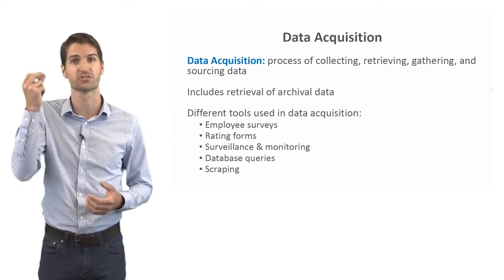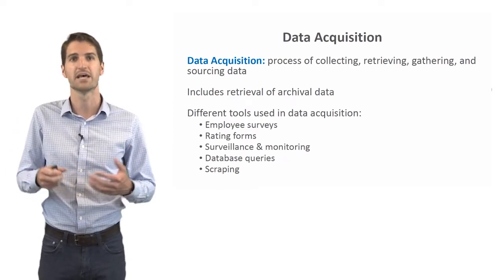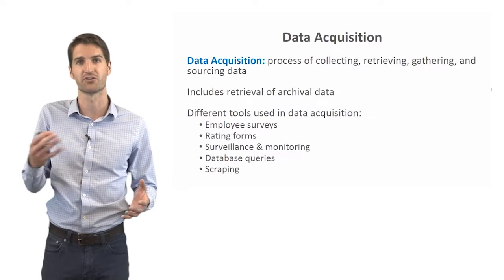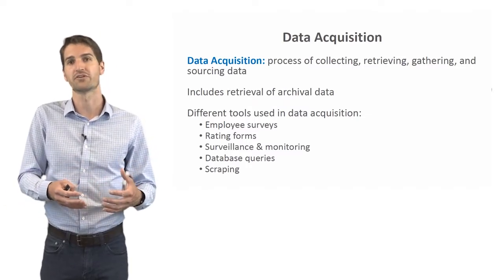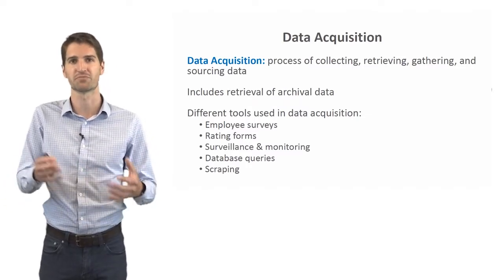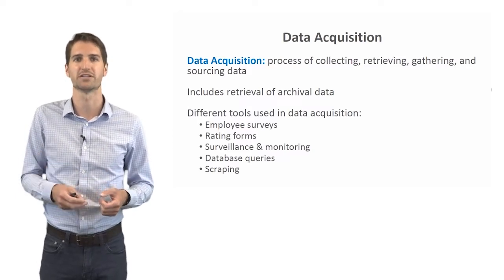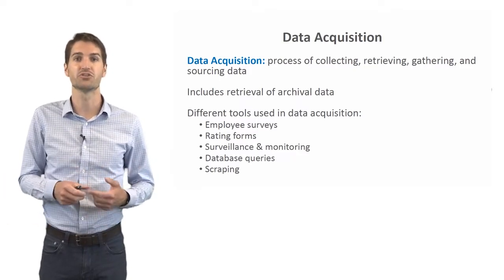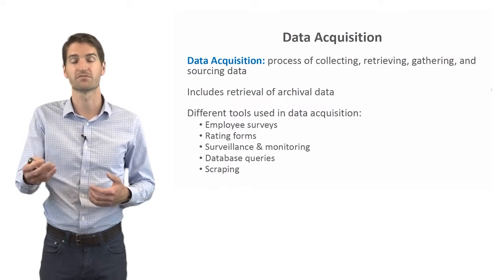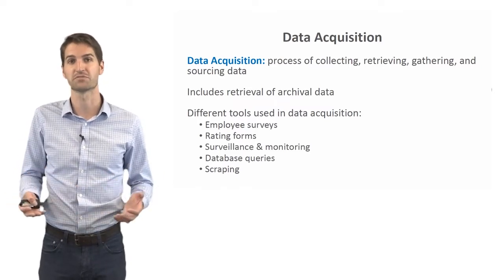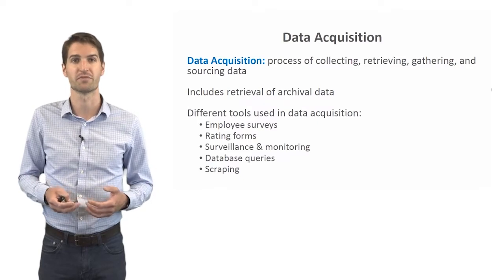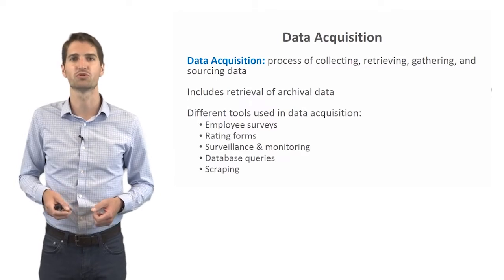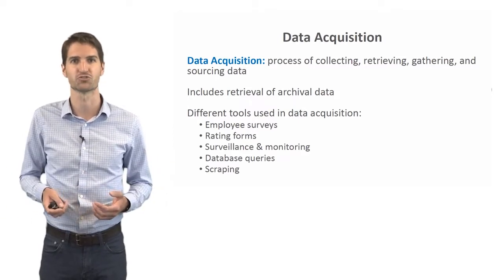Surveillance and monitoring tools are also used — for example, wearables or safety devices such as sensors that fit within hard hats and other equipment. These can measure things like acceleration via accelerometer to determine whether someone sustained an impact on the job, and can even monitor heart rate to track health. Additionally, database queries can be used to retrieve data from a relational database management system residing in an HR information system or enterprise resource planning platform.